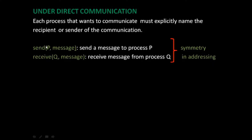Under direct communication, the send and receive primitives are defined like this: send(P, message) means send a message to process P, and receive(Q, message) means receive a message from process Q. Here you can see that there is symmetry in addressing — both the sender has to specify the name of the receiver and the receiver has to specify the name of the sender.